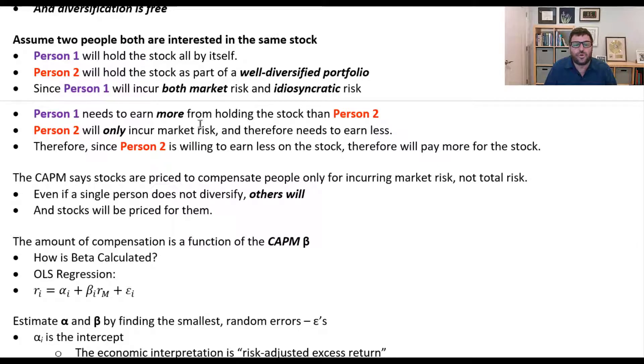And therefore person one needs to earn more from holding the stock than person two. Since person two will only incur market risk because they're going to hold it as part of a well-diversified portfolio, they are willing to earn less. So therefore, since person two is willing to earn less on the stock, they will pay more for the stock.